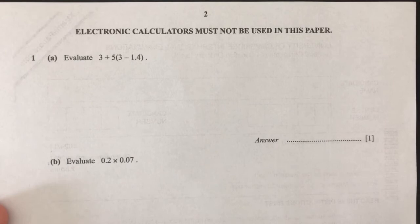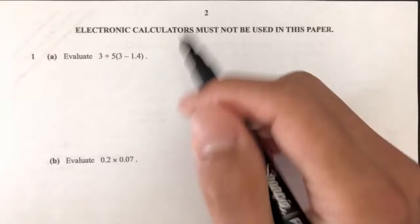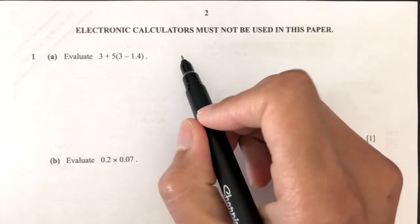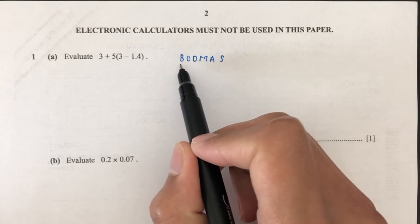Here we have: evaluate 3 plus 5 bracket 3 minus 1.4. We have to follow the rules of BODMAS. We first have to do everything inside the bracket, so 3 minus 1.4 will be 1.6. Then we do multiplication and then addition.